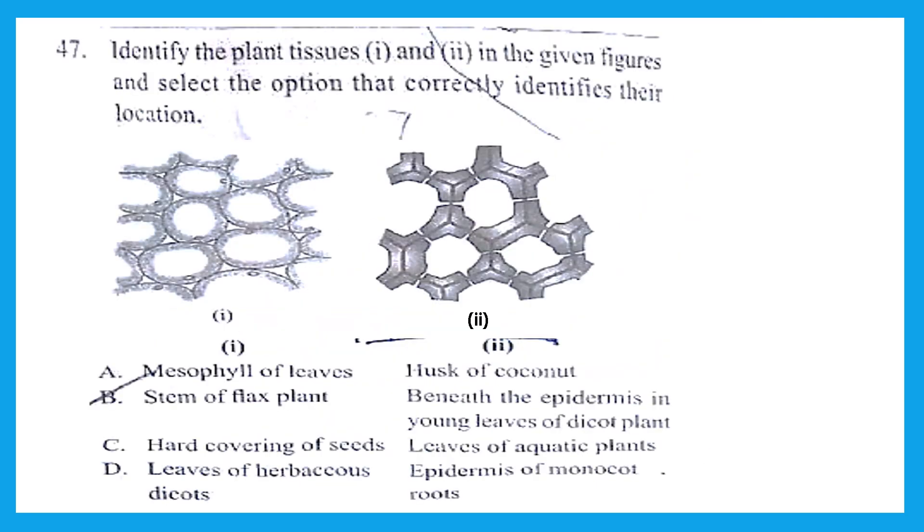Question 47, identify the plant tissues 1 and 2 in the given figures and select the option that correctly identifies their location. And the right answer here is option A, that is first one is mesophyll of leaves and the second one is husk of coconut.